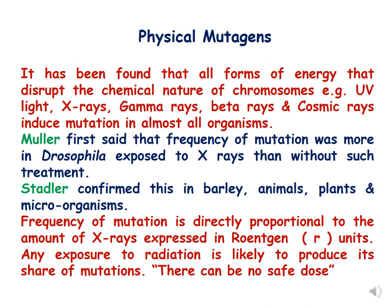All forms of energy that disrupt the chemical nature of chromosomes — such as UV light, x-rays, gamma rays, beta rays, and cosmic rays — can induce mutations in almost all organisms, and they are called physical mutagens.